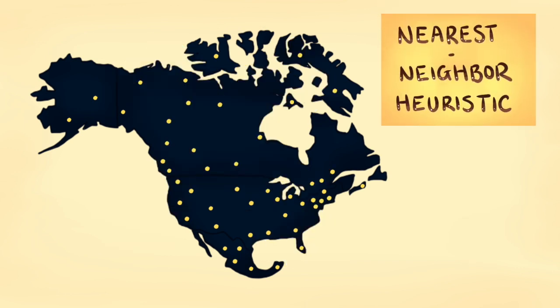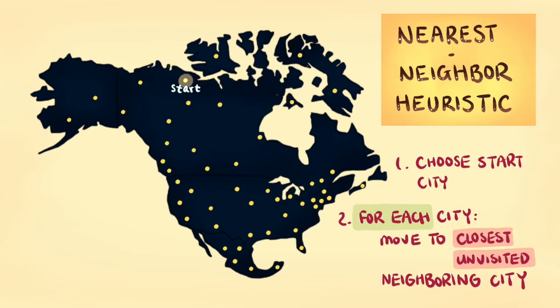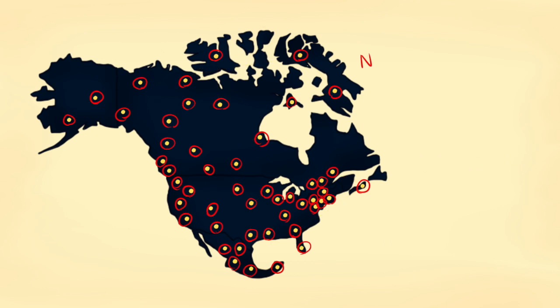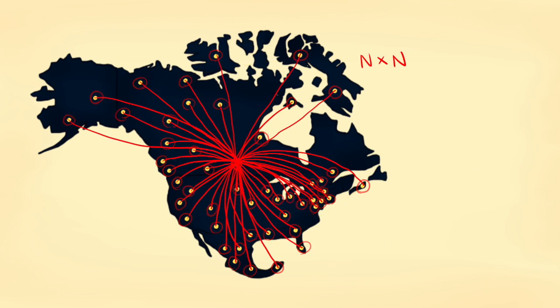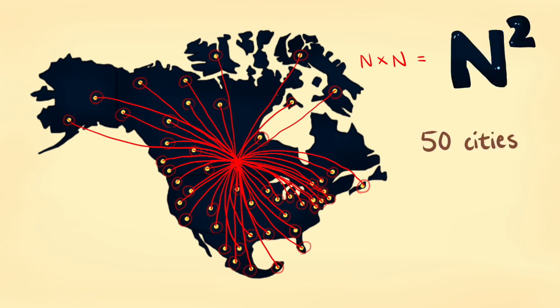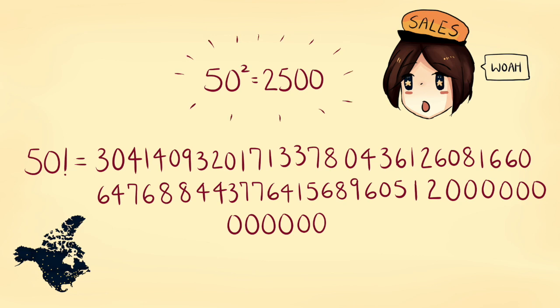A simple heuristic is the nearest neighbor heuristic, which starts at a random city and always chooses the closest, unvisited neighbor until we end up back at the start. Using this, we only need to go through all of our cities once, and for each city, check all of its neighbors once, so the worst case performance is n squared, or only 2500 steps to our 50 cities. A lot better than our previous monstrosity.